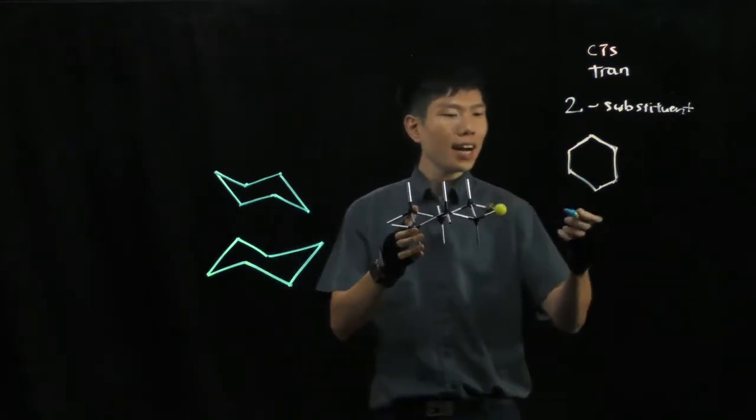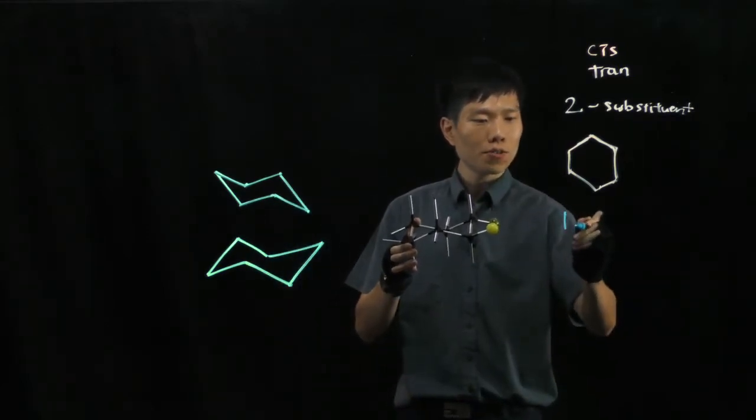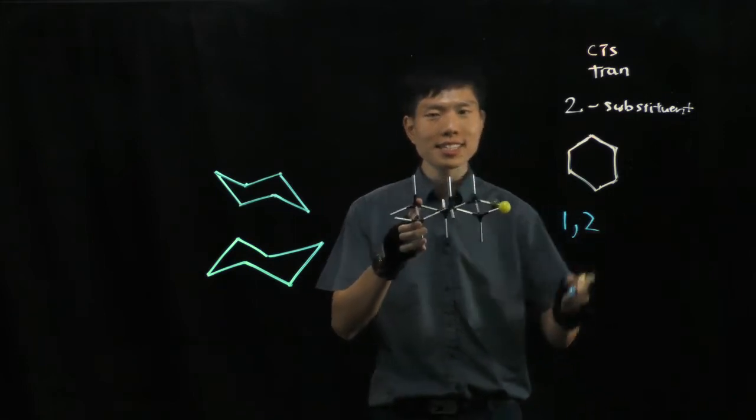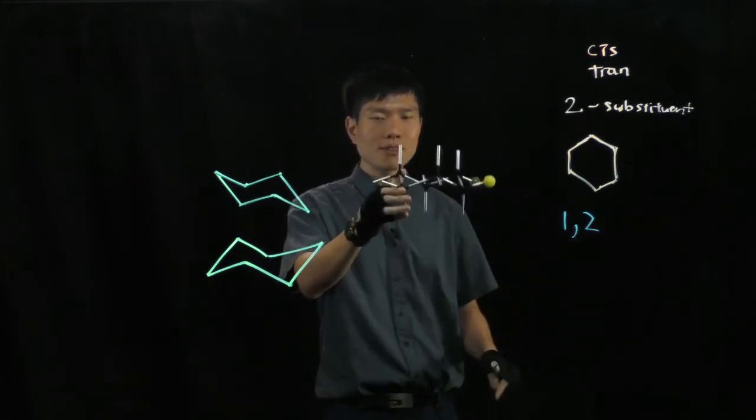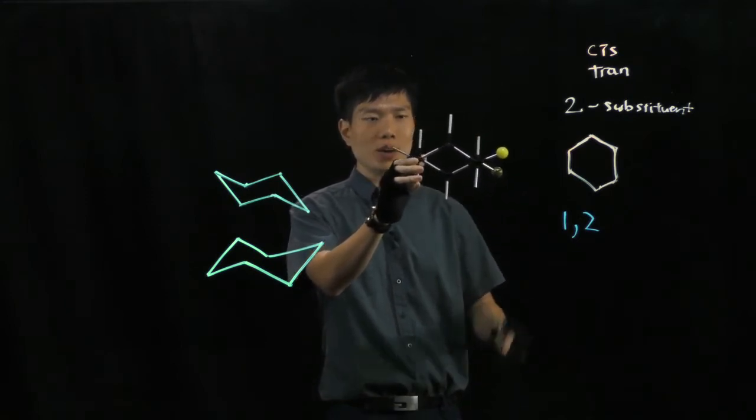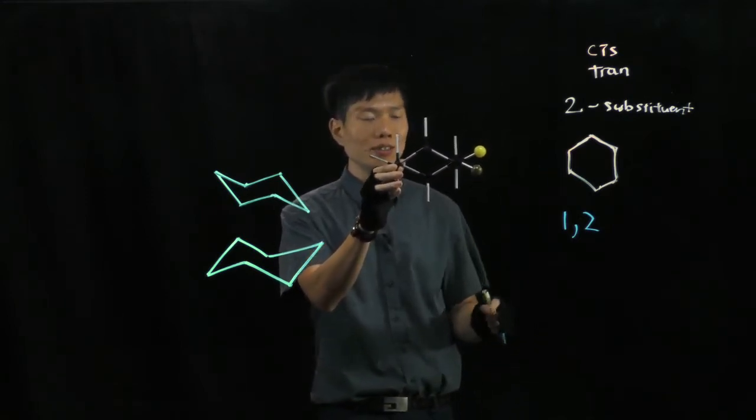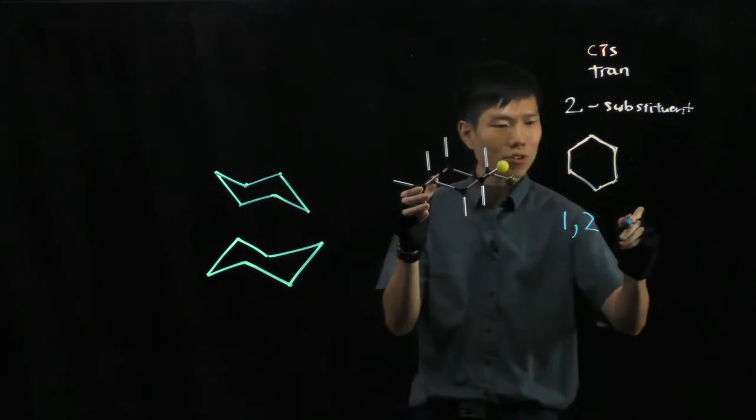What if the two substituents are 1,2 relative to each other, like in this case, 1,2. Now in this drawing, this molecule you see that one is pointing up, one is pointing down. So in this, you have trans.